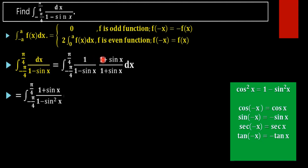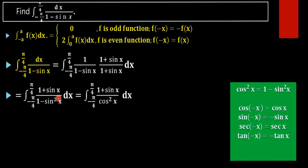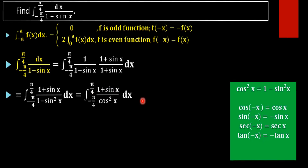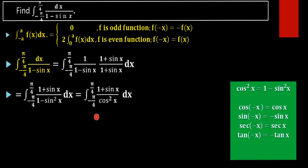On multiplying by 1 plus sin x in both the numerator and denominator, we will get 1 plus sin x in the numerator, and in the denominator 1 minus sin x times 1 plus sin x, which gives 1 minus sin squared x. Now, 1 minus sin squared x equals cos squared x, so we get the function as 1 plus sin x divided by cos squared x.